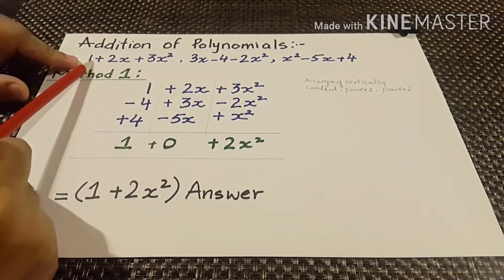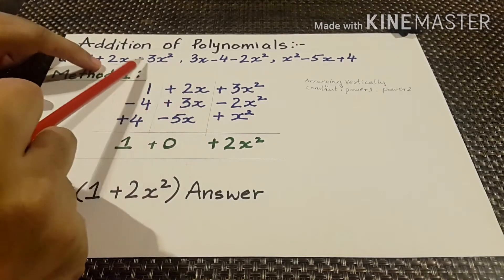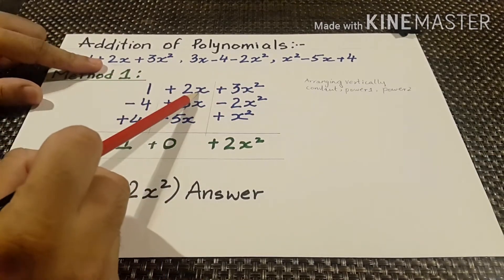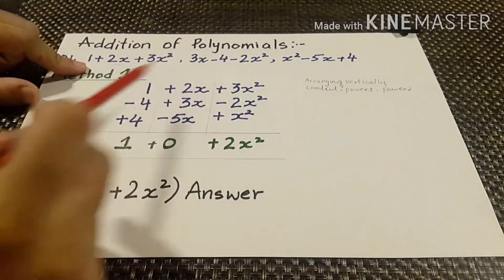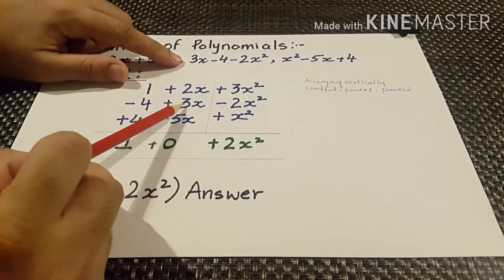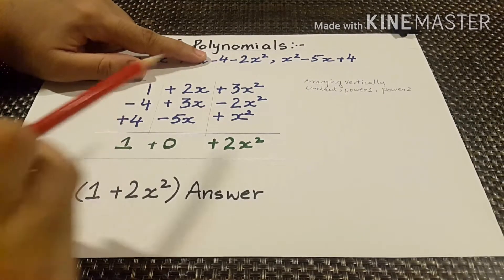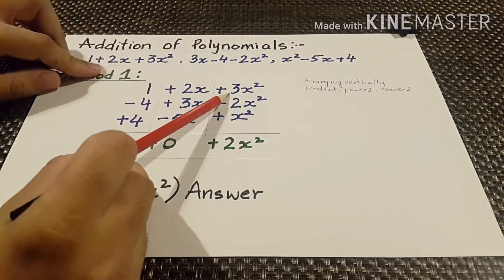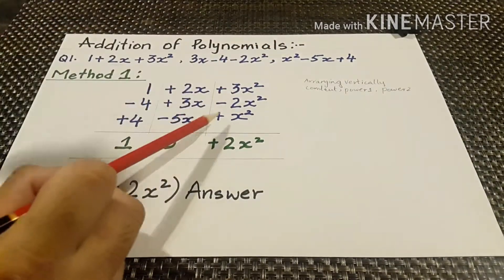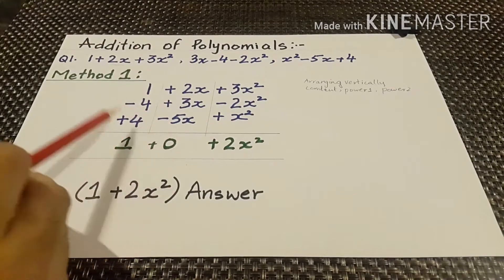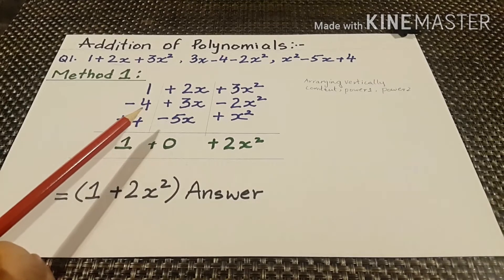In the first polynomial we have the constant 1, then plus 2x, then plus 3x squared — here the power of the variable is 1 and here it is 2. In the second polynomial we have the first term 3x placed under 2x, then minus 4 as the constant, then minus 2x squared under 3x squared. In the third polynomial the first term is x squared, then minus 5x, and plus 4.